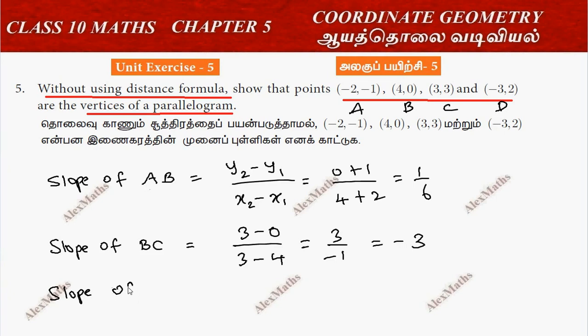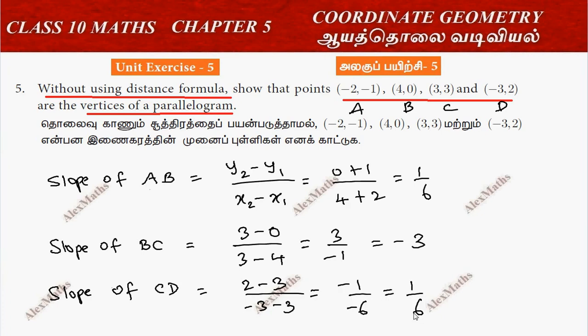Next, the slope of CD. That is 2 minus 3 by minus 3 minus 3, which gives minus 1 by minus 6, which is 1 by 6.